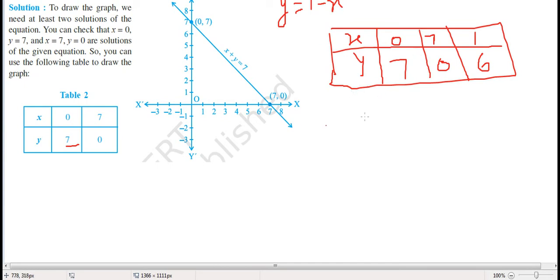Two pairs of coordinates have been taken. If you take 2 pairs of coordinates, put them: x is 0, y is 7 is one point, and x is 7, y is 0 is another point. Just join these two points, and we will get a straight line.